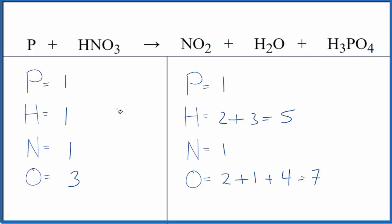So really let's start with the hydrogens here. If we put a five in front of the HNO3 we'd have one times five that would balance the hydrogen atoms. Then one times five that would give us five nitrogen atoms and then three times five that gives us 15 oxygens.